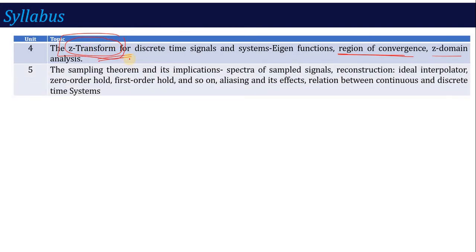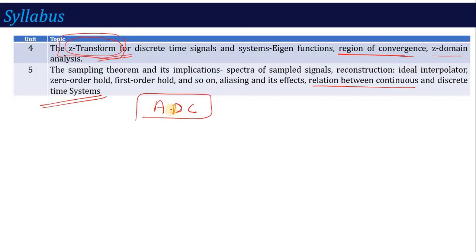Unit 5 is completely different. It covers how to convert a continuous time signal into a discrete time system — the process called analog to digital conversion. You will study the sampling theorem, what sampling is, what happens to the spectrum of the sampled signal, and how to reconstruct the original signal from the sampled signal. Topics include the ideal interpolator, zero-order hold, first-order hold, and one major important topic — aliasing: what aliasing is, what causes it, and why it happens.